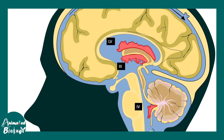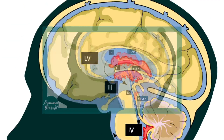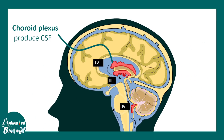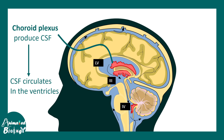If we zoom into these ventricles, we can see that they are lined by choroid plexus. This choroid plexus secretes cerebrospinal fluid, which flows through these areas around the brain and eventually gets absorbed. The choroid plexus is the production hub for cerebrospinal fluid, and CSF circulates throughout the ventricles and gets reabsorbed in the arachnoid granulations.